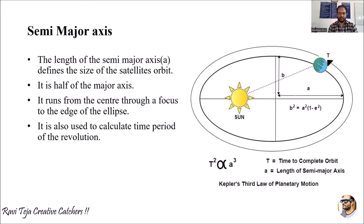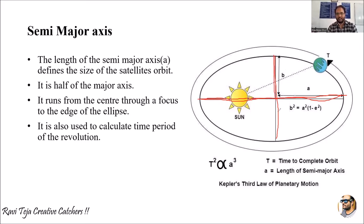The first orbital element is the semi-major axis. As we discussed in Kepler's laws, a smaller body moves around a larger body in an elliptical orbit. If we divide the elliptical path into two segments, the long line is considered the major axis and the short line is considered the minor axis.